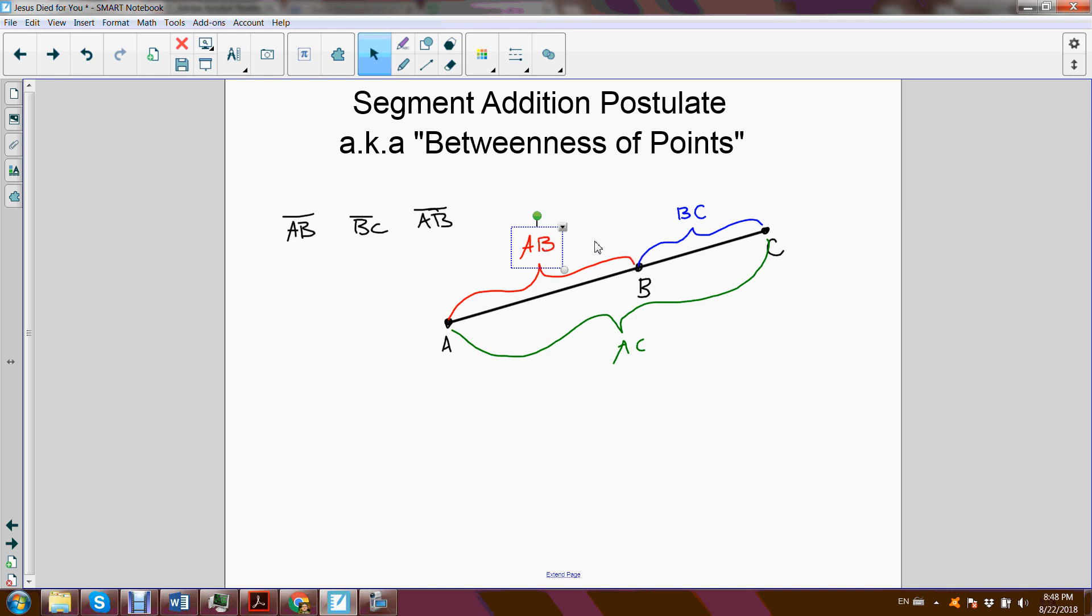It says that whatever AB is plus what BC is, whatever BC is, is going to equal AC. The distance from A to B plus the distance from B to C equals the distance from A to C.